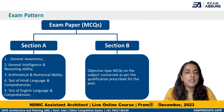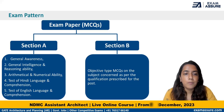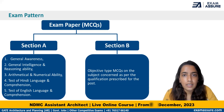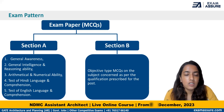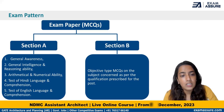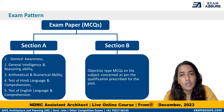As far as the exam pattern is concerned, the paper is divided into two sections. There will be only one written exam of MCQs conducted. The first section, Section A, will consist of general awareness, general intelligence and reasoning, arithmetical and numerical ability, test of Hindi language, and test of English language. This is more of the aptitude part.